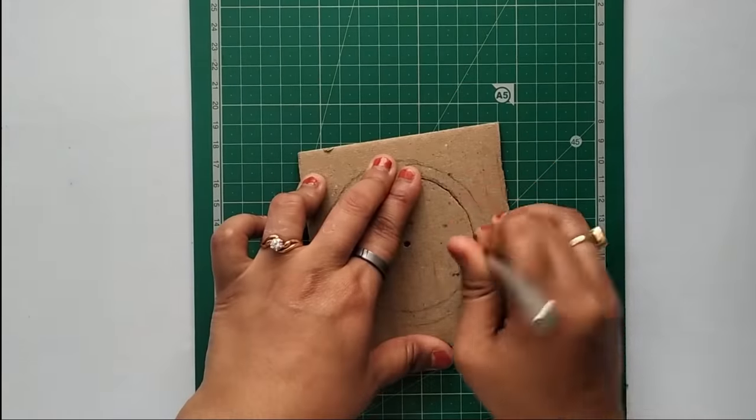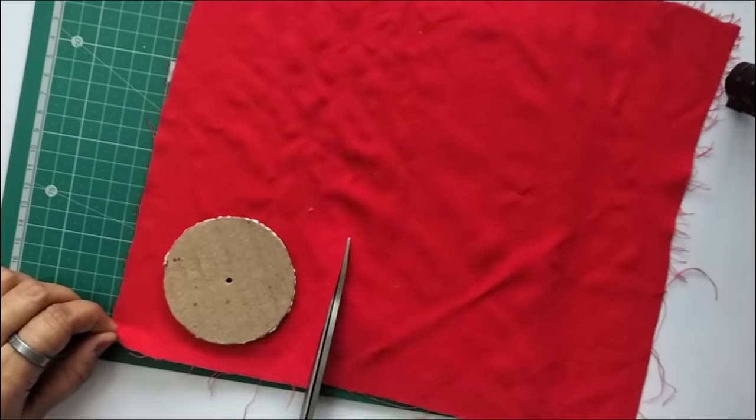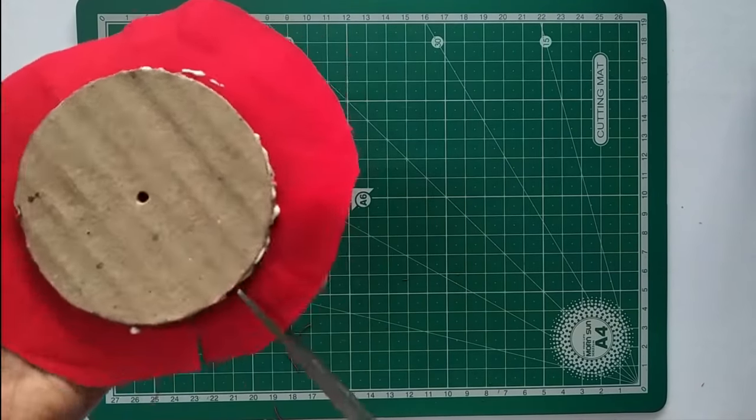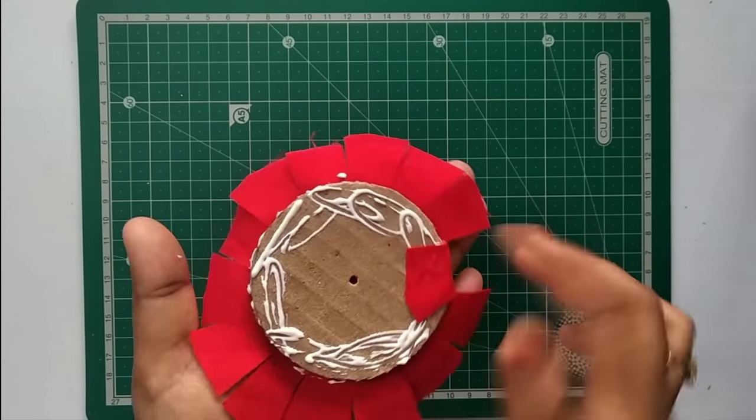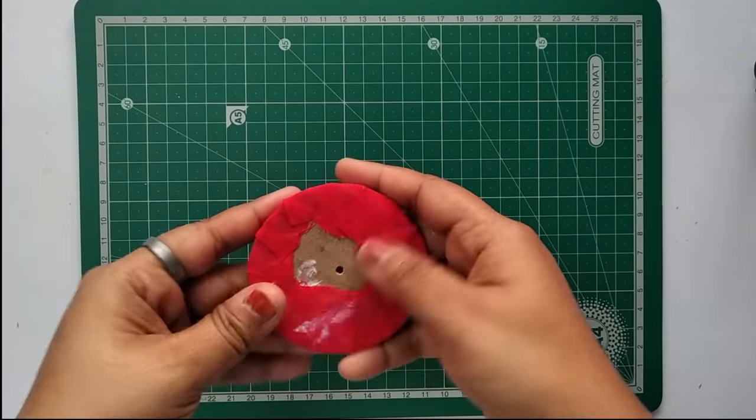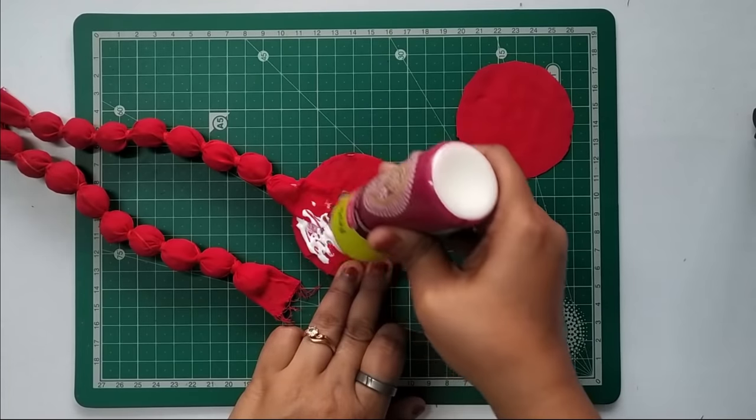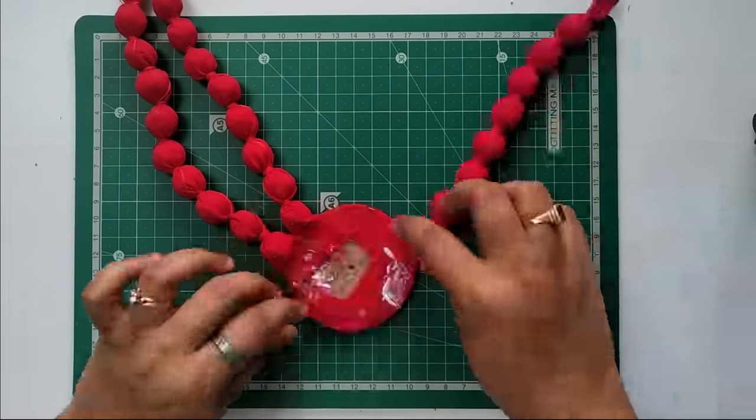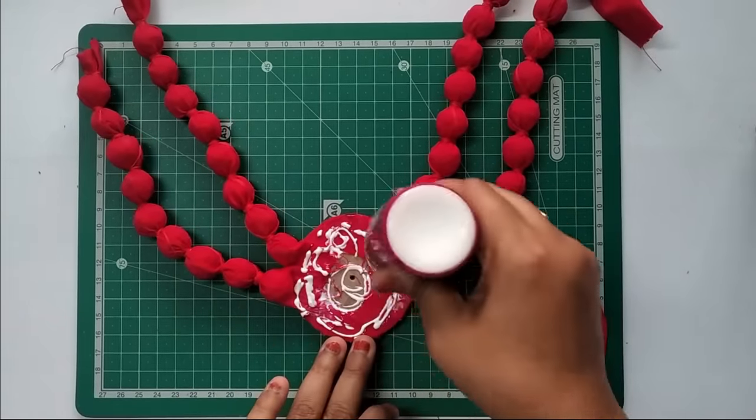Cutting a round shape from a cardboard, applying some glue and sticking it to a red fabric. Attaching this 4 ball dory on the back side of this cardboard like this and then I will secure this on the back side using a round shape cotton fabric.